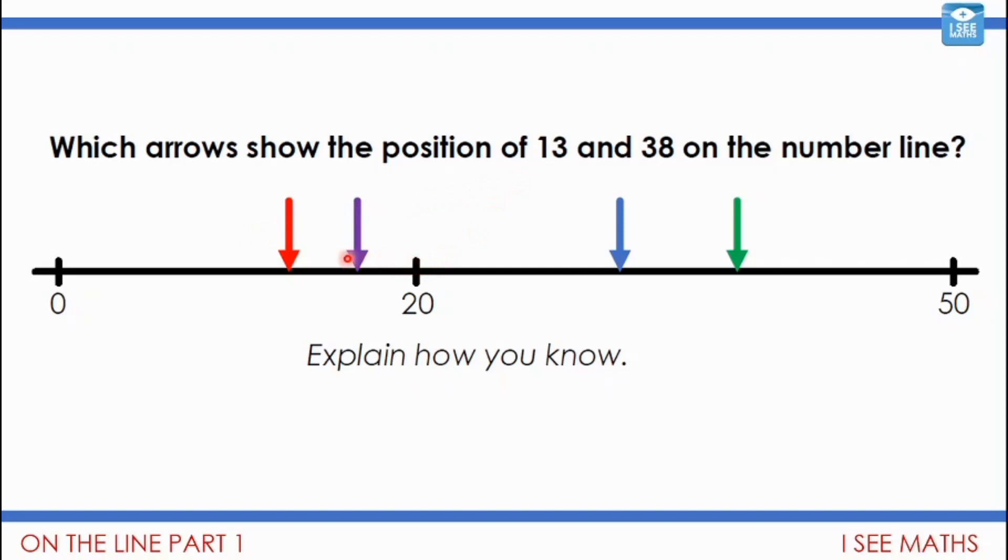So if that was 7, that's too small a space to be 7 there. Because I think that 10 must be, what about here? So I don't think it could be that one. So actually, 13, it must be this one here.